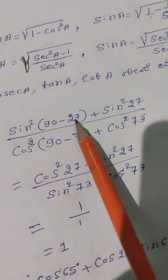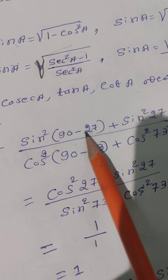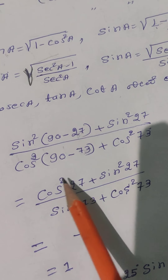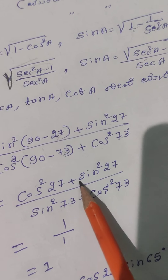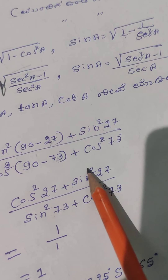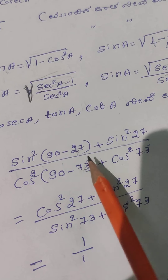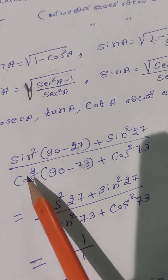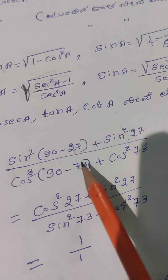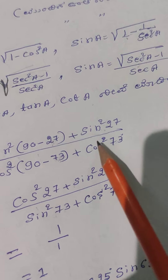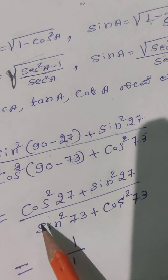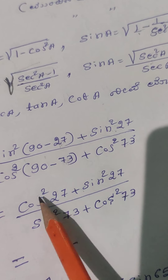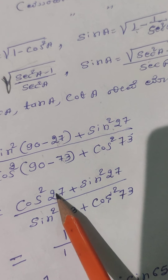cos²(90° − 3°) + cos²27° + cos²27° + cos²... So, cos²(90° − 73°) + cos²73° + cos²73° + cos².